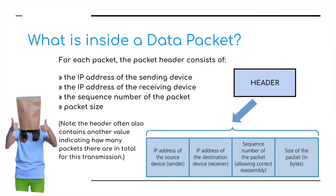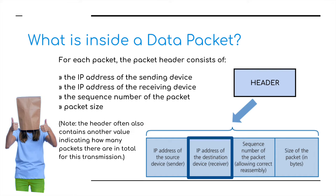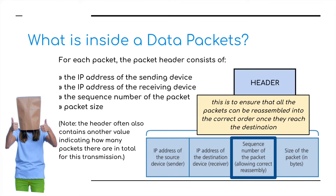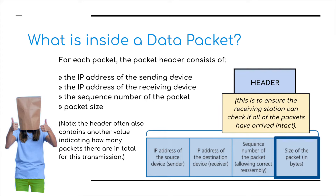The header contains the following information: the IP address of the sending device — so your computer, if you're sending a message or a file, the header will contain that IP address. It will also contain the IP address of the receiver's computer. It will include the number in the sequence of the particular packet — for example, packet 15 in 50,000. And it will also give us an indication of the size of the packet; we said it should be around about 64 kibibits, but the header will give a more accurate file size.